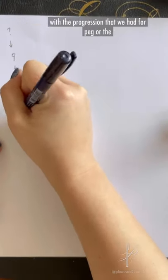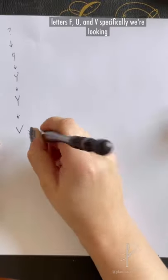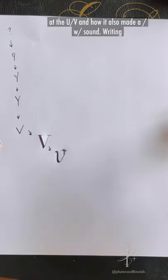Again, I'm not a paleographer and I'm not a linguist and I do this very simply, but first we start off with the progression that we had for PEG, or the letters F, U, and V. Specifically, we're looking at the U, V, and how it also made a W sound.